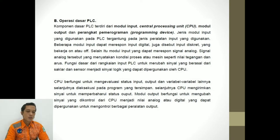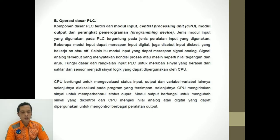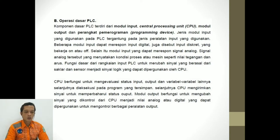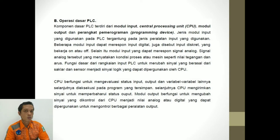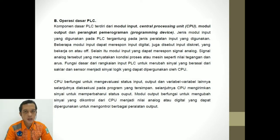CPU berfungsi untuk mengevaluasi status input, output, dan variabel-variabel lainnya, kemudian dieksekusi pada program yang sudah tersimpan di dalam CPU. Selanjutnya, CPU mengirimkan sinyal dan memperbarui status output. Modul output berfungsi untuk mengubah sinyal yang dikontrol dari CPU menjadi nilai analog atau digital yang dapat digunakan untuk mengontrol berbagai peralatan output, seperti motor, lampu, pompa, pemanas, dan buzzer.